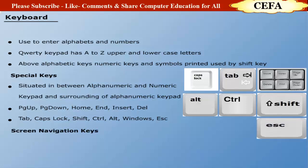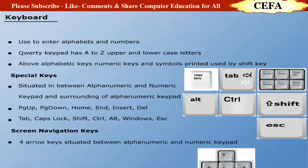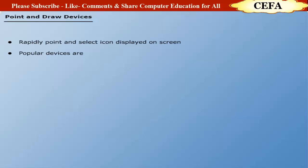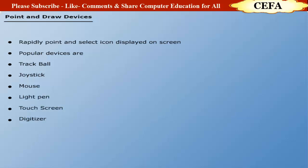Screen navigation keys: These are called arrow keys, situated between the alphanumeric and numeric keypad. There are four arrow keys: left, right, up, and down. These are used to move the cursor anywhere on the screen. Point and draw devices: A point and draw device is an input device which helps to rapidly point and select an icon displayed on the screen. Popular devices include trackball, joystick, mouse, light pen, touch screen, and digitizer.